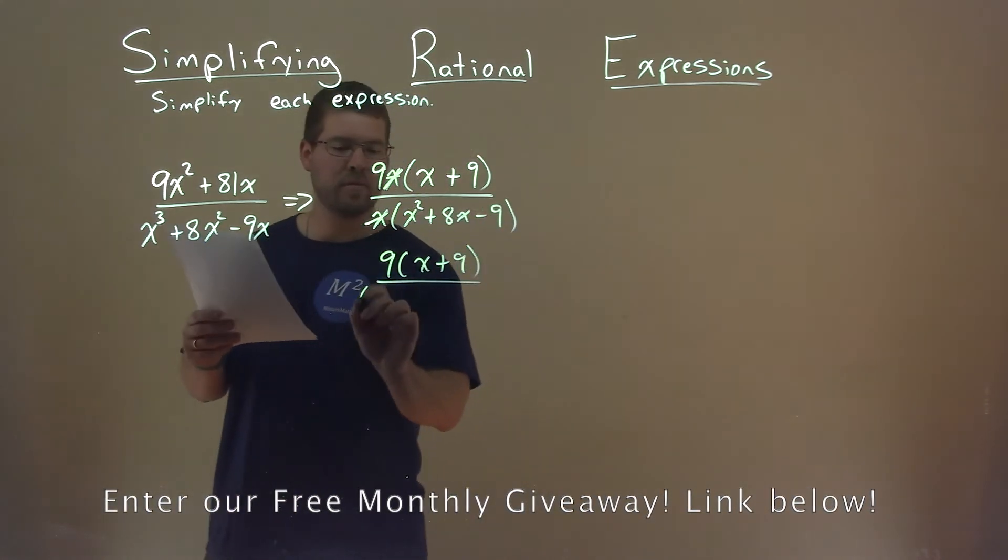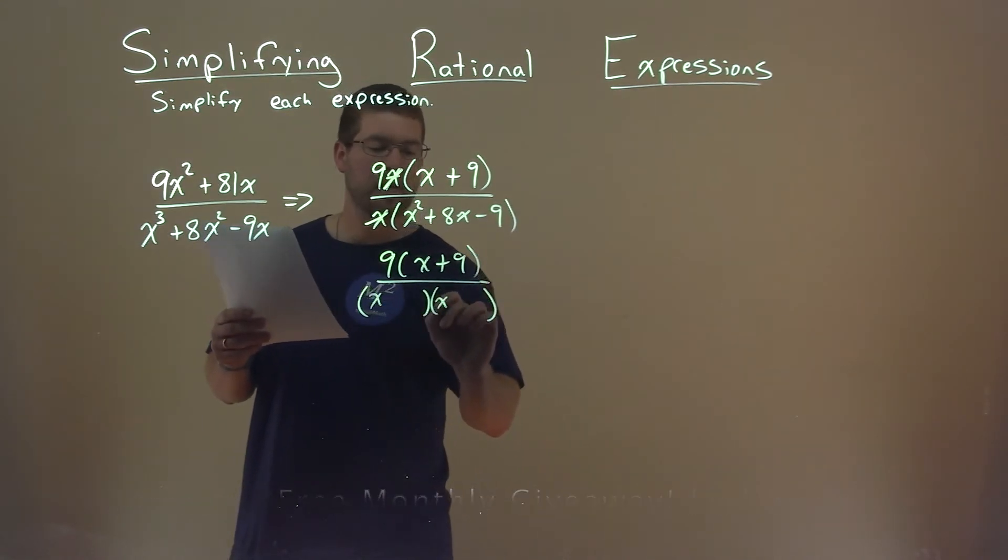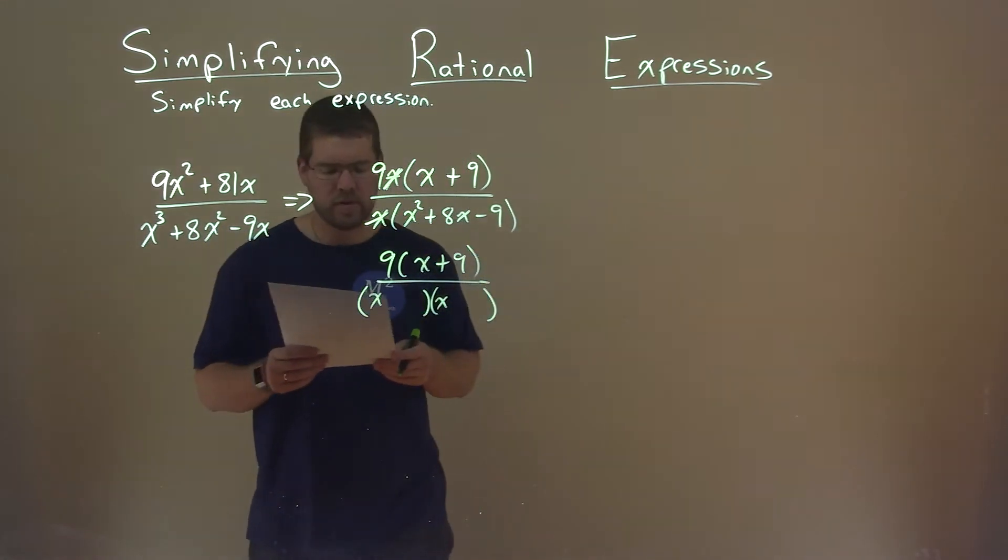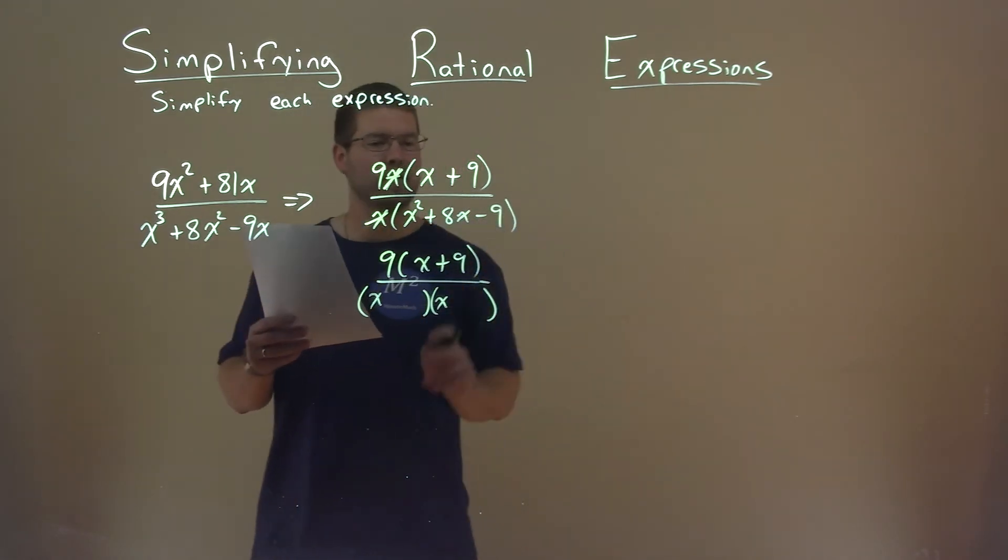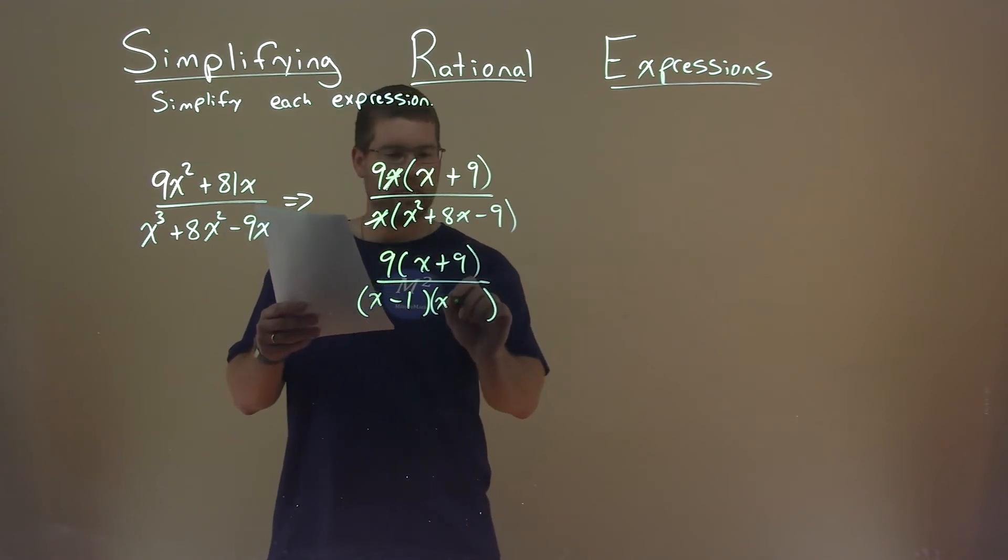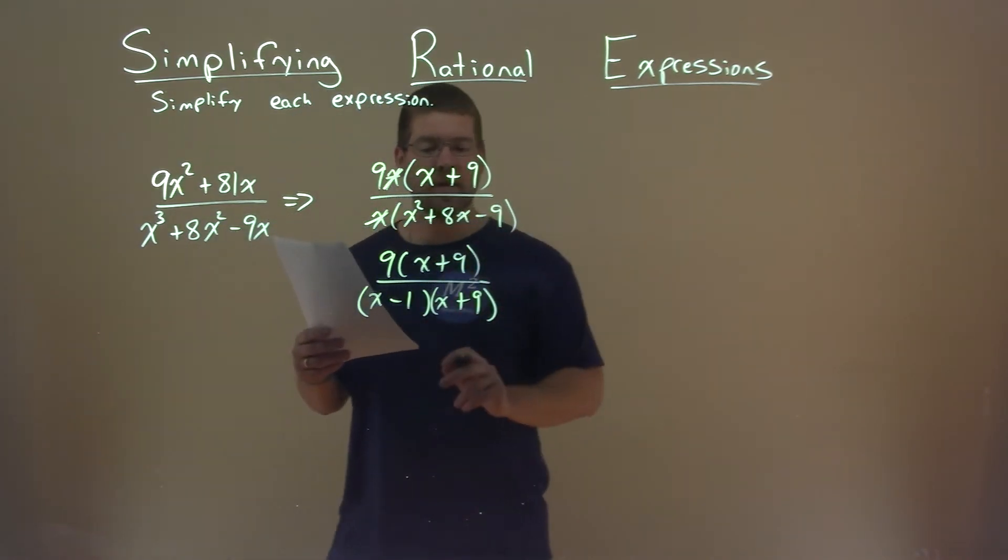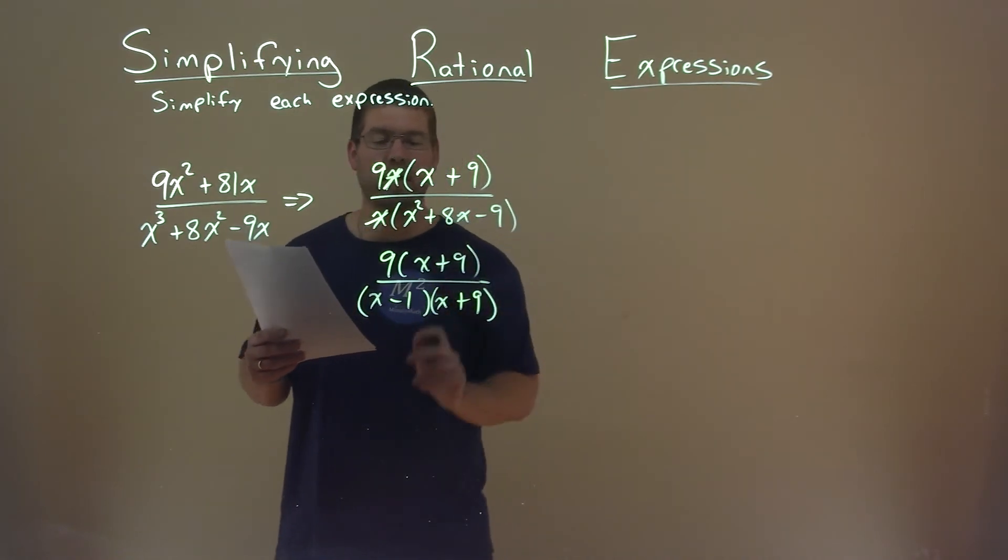The denominator though, I believe, can factor fairly easily. I set up my form here, and I ask myself what two numbers multiply to be negative 9 but add to be a positive 8. That's a negative 1 and a positive 9. Negative 1 times 9 is negative 9. We add the two, we get a positive 8.